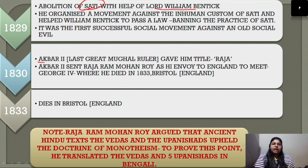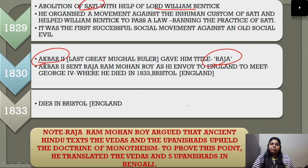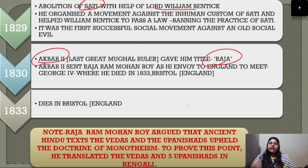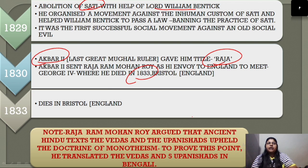In 1830, Akbar II, the Mughal ruler, gave Raja Ram Mohan Roy the title of Raja and sent him as his envoy to meet King George IV of England. In 1833, Raja Ram Mohan Roy went to England and then to Bristol, where he passed away.